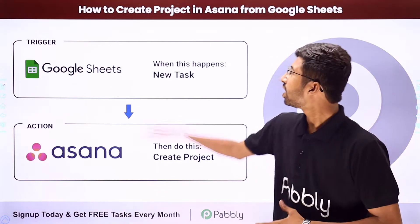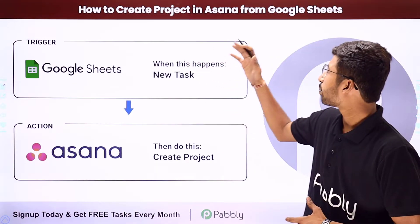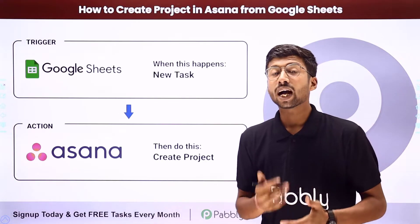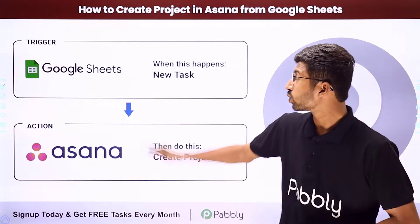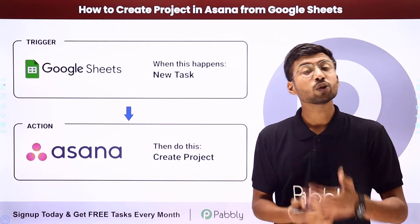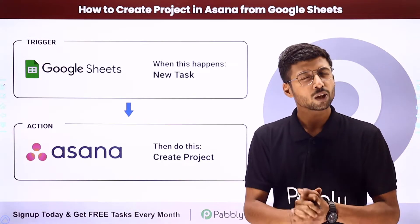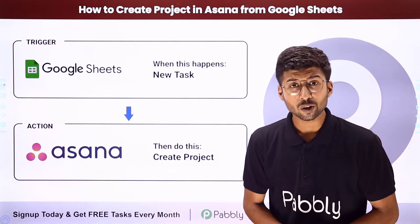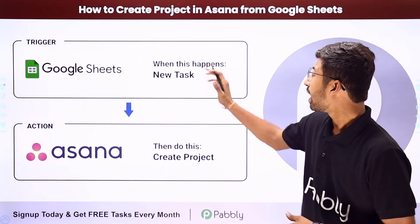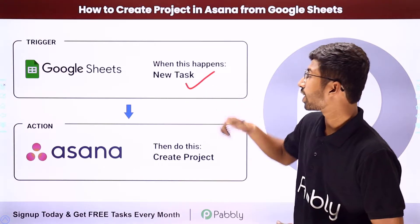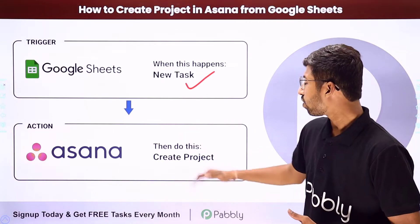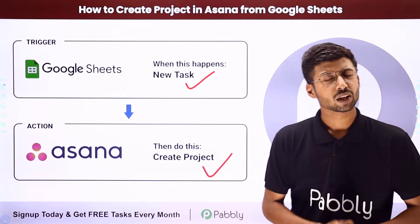In this video, we will learn how to create a project in Asana from Google Sheet. Suppose you are adding the details of a new project in Google Sheet and you want to create those projects in Asana as well. You can completely automate this process. The trigger of this automation will be the addition of a new project in Google Sheet, and the action will be the creation of a project in Asana.